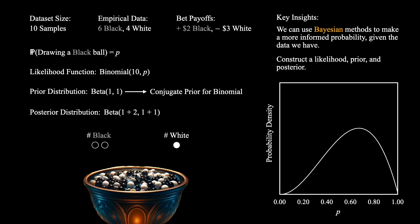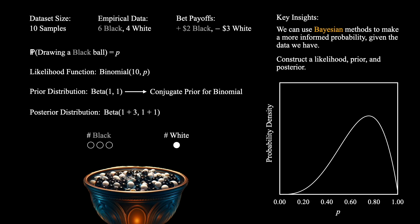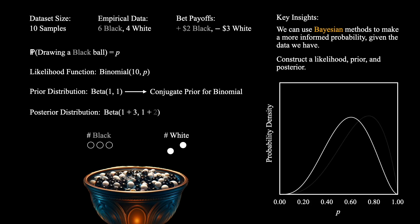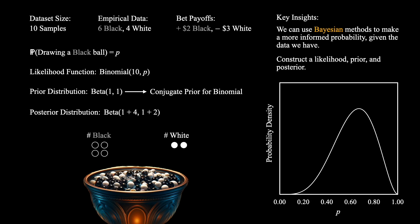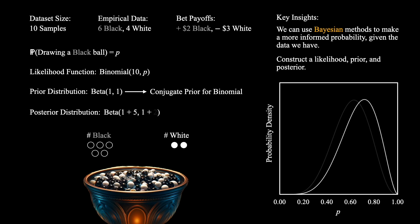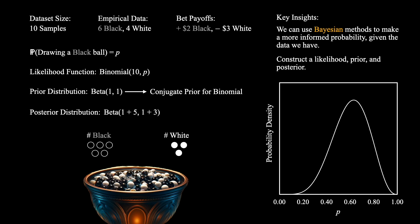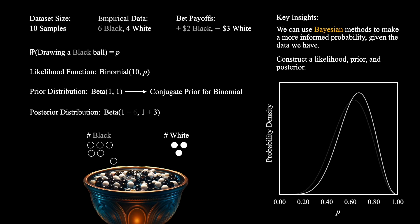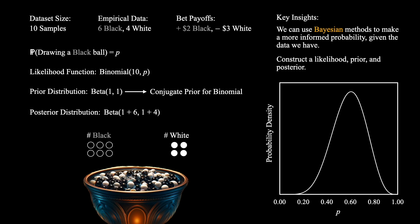Another black ball skews the distribution slightly towards black. As we draw another black ball, the distribution gets even further skewed. This process repeats, with black and white balls slowly shifting the distribution with each successive draw, until we have finally completed our samples and gotten all 10 draws.